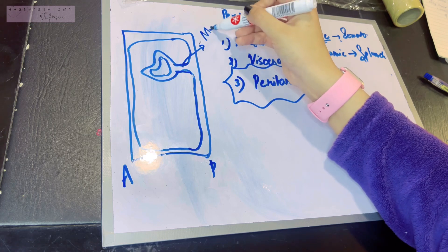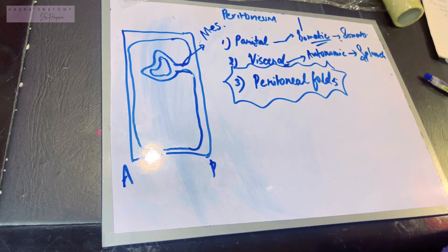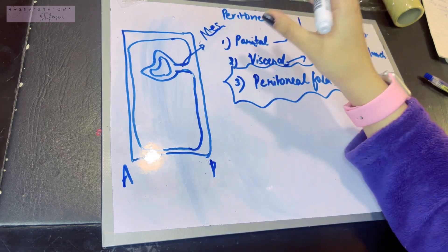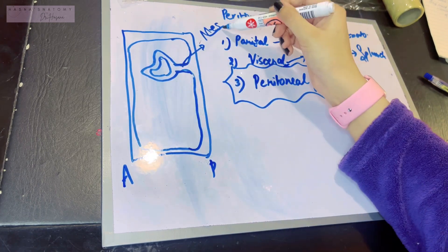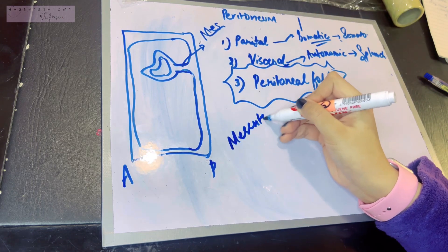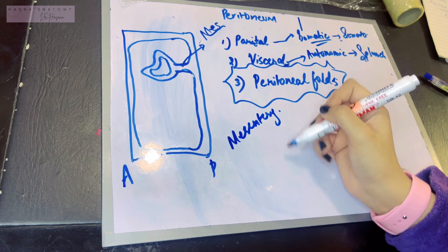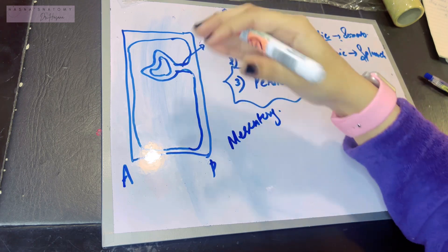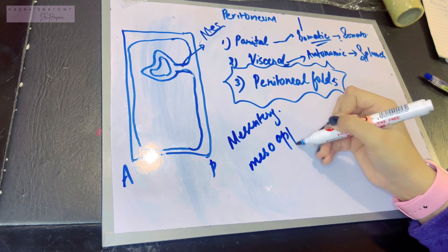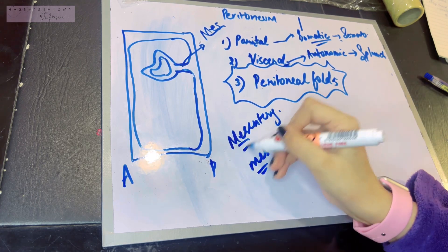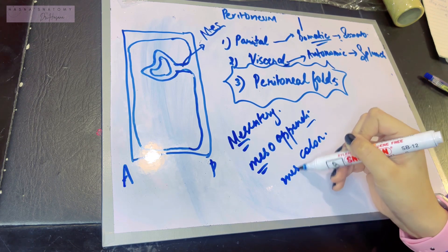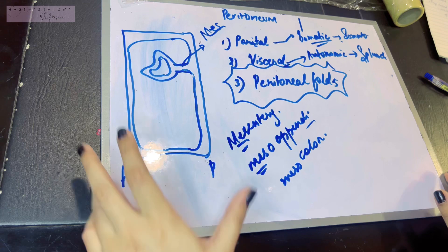These peritoneal folds have a prefix of 'mes.' The majority of parts of the gut are known as the mesenteries — M-E-S-E-N-T-E-R-Y. However, if there's a specialized organ like the appendix, then you'll call it the meso-appendix, and the colon will have its own special name. The prefix 'mes' will always be added.